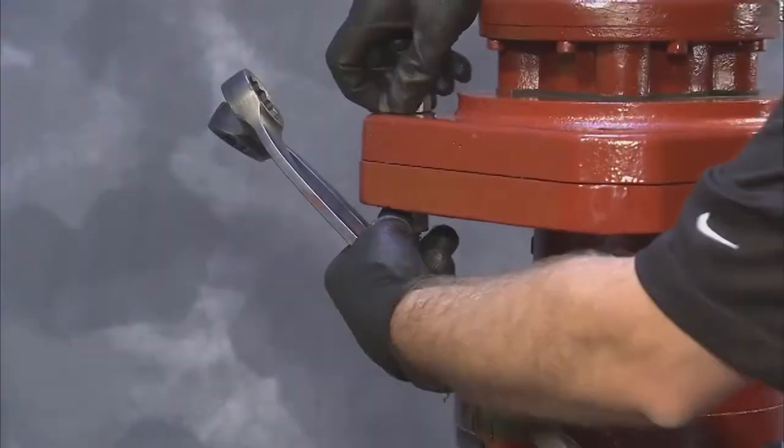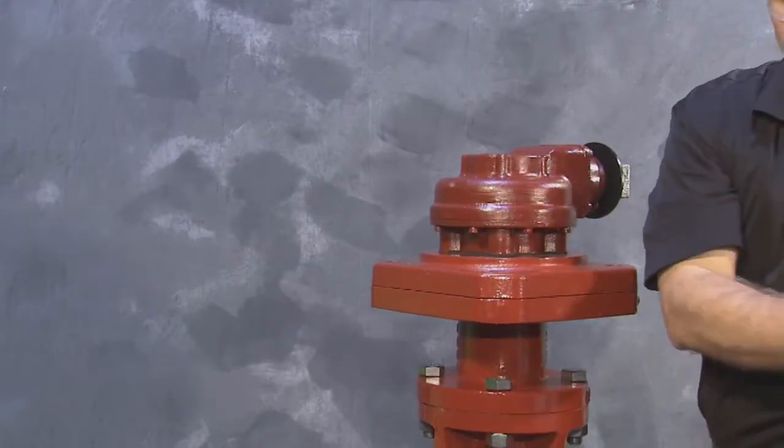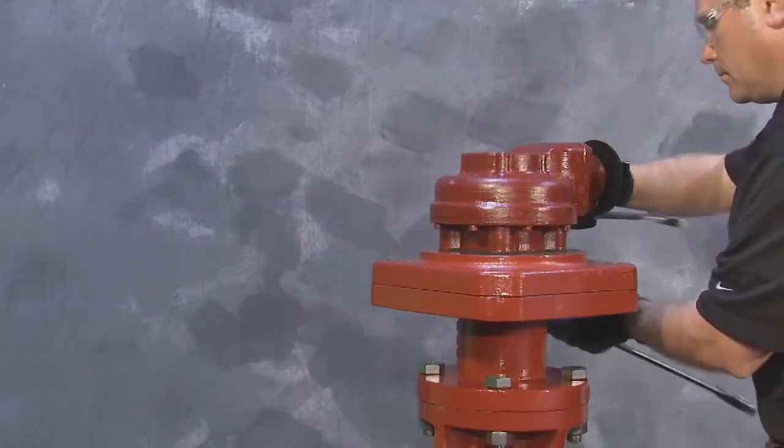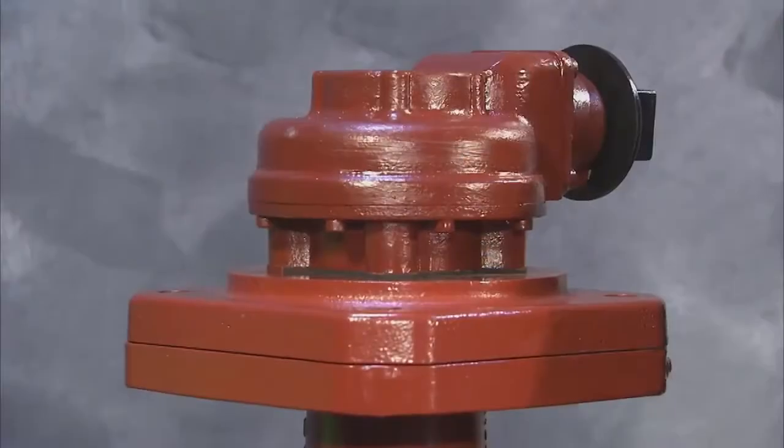Proceed to locate and remove the hex bolts and nuts on the adapter plate, releasing the gearing and plate from the extension and valve body. Before removing the gear housing, observe and remember the op nut's orientation.